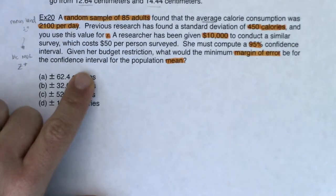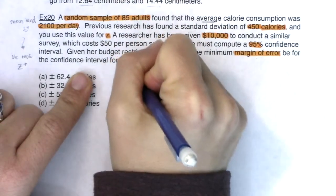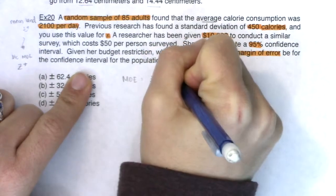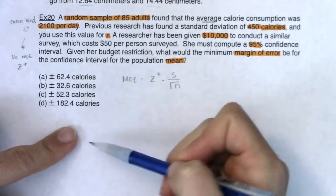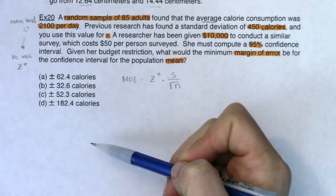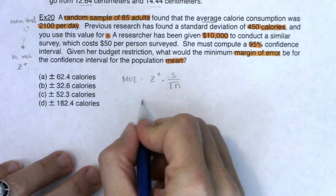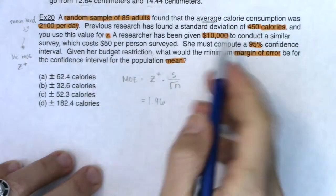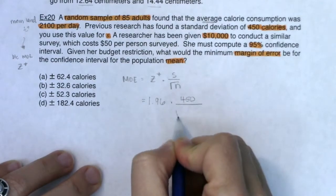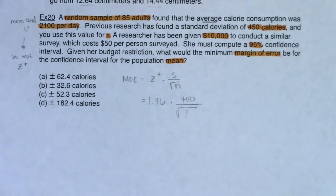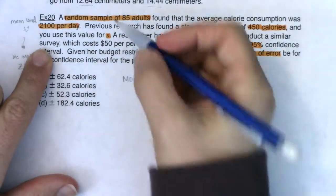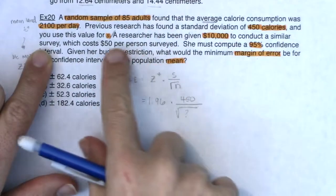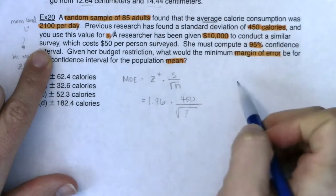The formula for margin of error is: z-star times S over the square root of N. They're not asking for sample size; this is everything that comes after the plus-or-minus in a confidence interval. For 95%, z-star is 1.96. They told me S is 450. Now I need N. In the first random sample they took 85 adults, but the researcher is redoing this survey with her new budget, so from this part of the question on, it's new — we'll use the previous standard deviation but rerun the study.